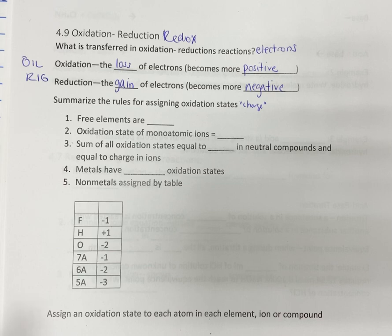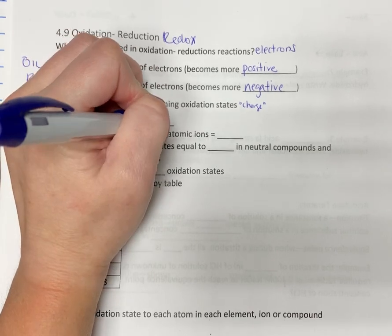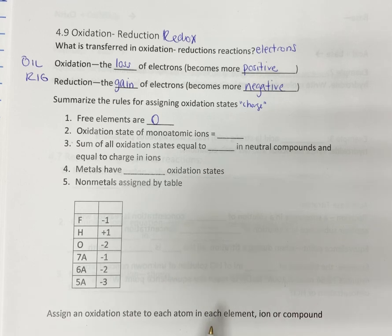But the rules are, and you need to know these because I won't give them to you, okay? Free elements are zero. They have no charge. And it doesn't matter whether you're talking about an atomic element or a molecular element. They have no charge, so it's zero.